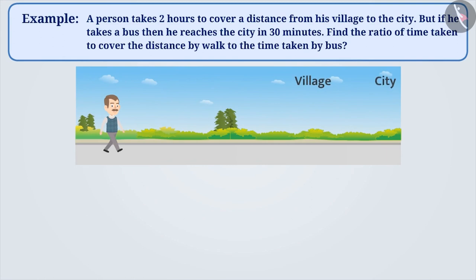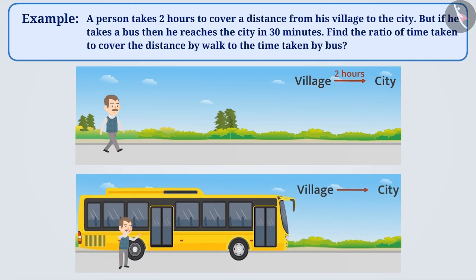A person takes 2 hours to cover a distance from his village to the city. But if he takes the bus, then he reaches in 30 minutes. Find the ratio of the time taken to cover the distance by walk to the time taken by bus.